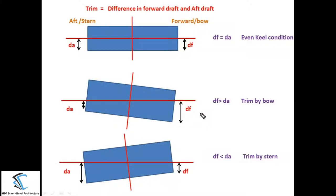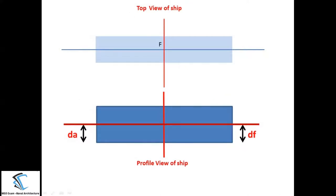When the ship trims, it oscillates about a point called the center of flotation. If you see the ship in a profile view, the ship will start oscillating about the center of flotation only. The center of flotation is the centroid of the water plane area. To understand this concept, let us take a box-shaped vessel. Looking at the ship from the top view, the centroid of this water plane comes at the intersection point of the midship line and the centerline of the ship.